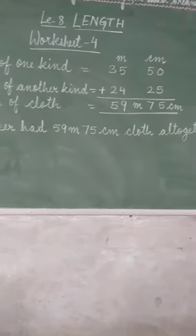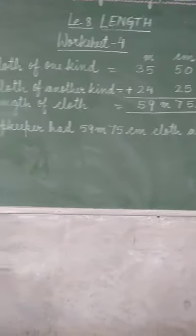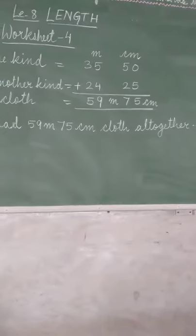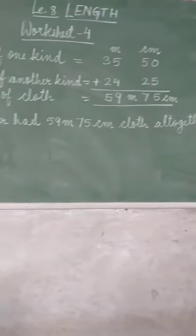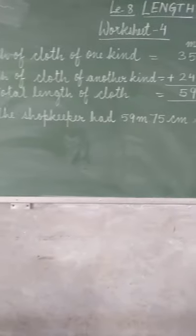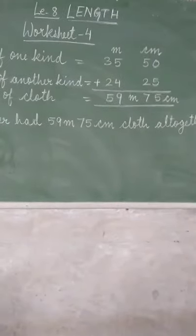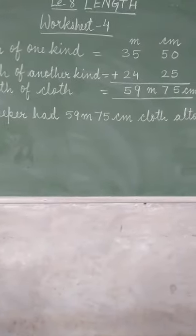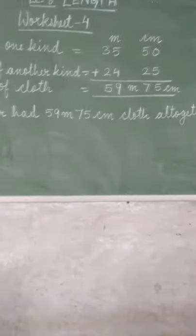Now the question goes: a shopkeeper has 35 meter and 50 centimeter cloth of one kind and 24 meter, 25 centimeter of another kind. You have to find what is the total length of the cloth he has all together.